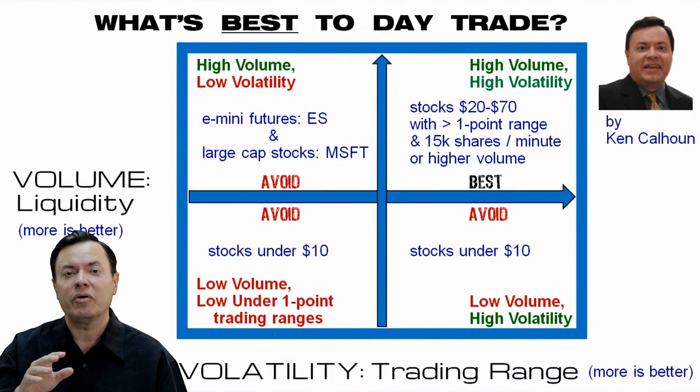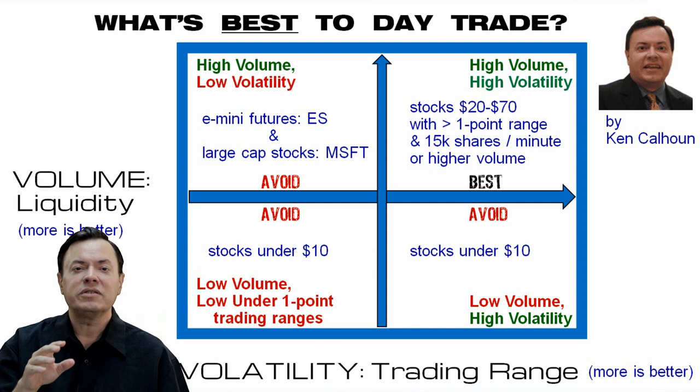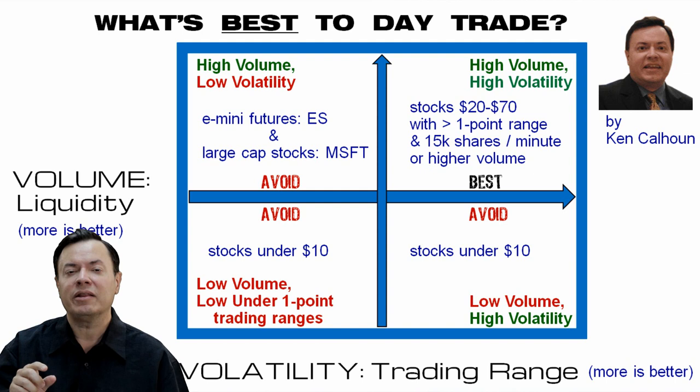Take a look at this grid I put together. It's very important that you understand: on the x-axis and y-axis we've got volume and volatility. There are four different quadrants of types of instruments to trade. The worst thing you can do when you're trying to day trade is to trade instruments with low volume and low volatility — that's in the lower left quadrant of this diagram.